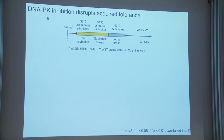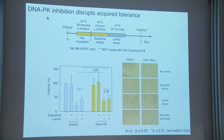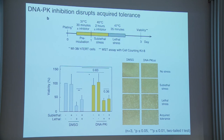I then performed an acquired tolerance experiment: I plated cells, treated with inhibitor at normal temperature, then performed sublethal stress with or without inhibitor, followed by lethal stress, waiting two days to measure viability. In DMSO controls: no stress gives 100% viability, sublethal stress is variable, lethal stress reduces viability, but sublethal plus lethal (acquired tolerance) increases viability. When adding the DNA-PK inhibitor, acquired tolerance is lost — but this is because there's a gain in lethal stress tolerance instead.